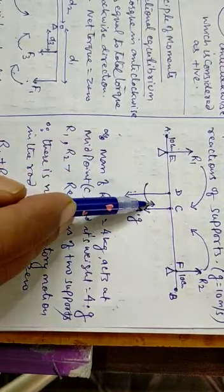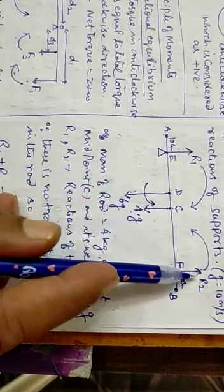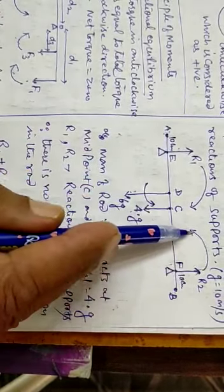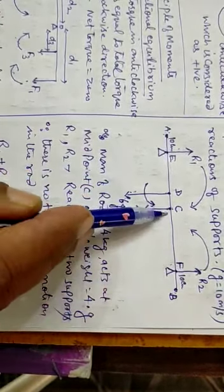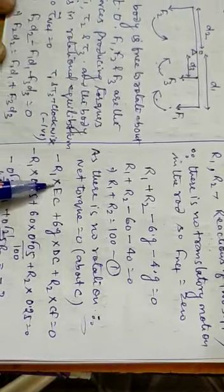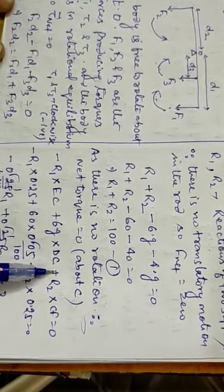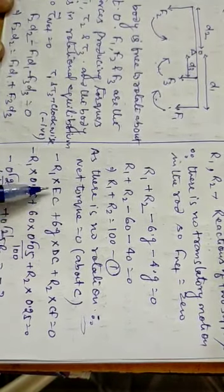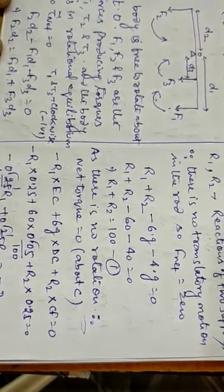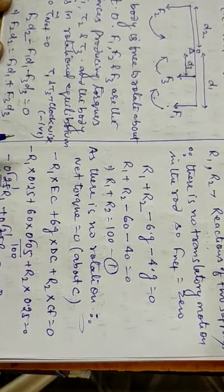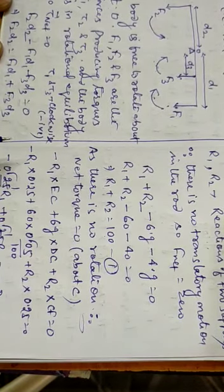R1 into EC minus 6g into DC plus R2 into CF equals zero. The clockwise torques are negative and anti-clockwise are positive. Solve step by step to find R1 and R2.